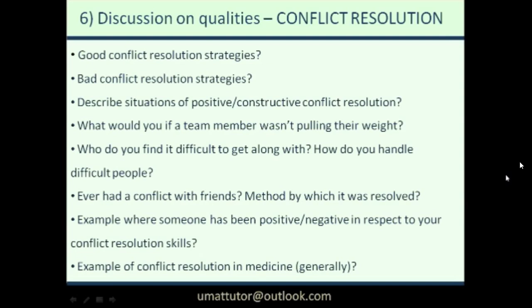Moving on to conflict resolution. Many of the questions are very similar to the teamwork ones, just framed around conflict. For good and bad conflict resolution strategies, again aim for eight or nine different points each. Good strategies include being non-confrontational, speaking to both parties initially in private and then bringing them together, acting as a mediator, and being empathetic towards all involved. For the question about what you'd do if a team member isn't pulling their weight, draw on those same strategies and work through the problem with around seven or eight steps.